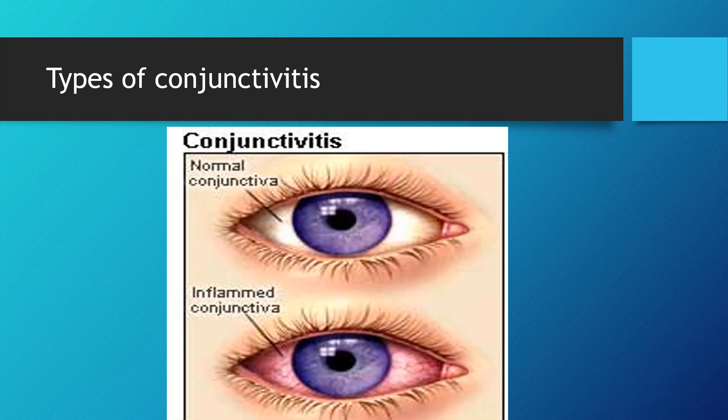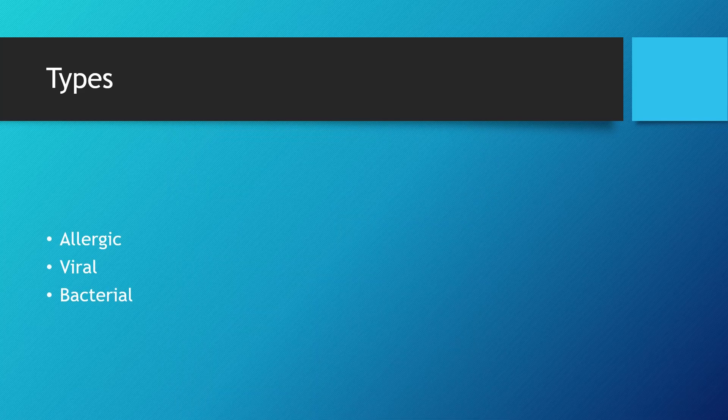There are different types of conjunctivitis. In this picture you can see normal conjunctiva overlying the sclera showing whitish color, but when there is inflammation due to increased congestion of blood vessels, the normal color turns red. There are three types of conjunctivitis: the commonest is allergic conjunctivitis, then viral conjunctivitis and bacterial conjunctivitis.